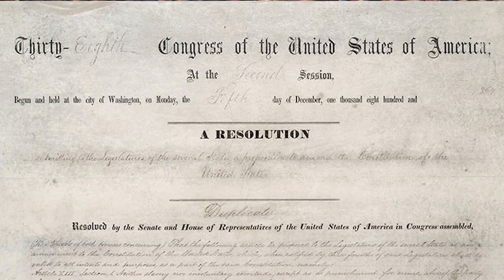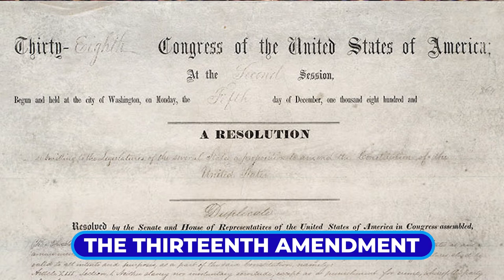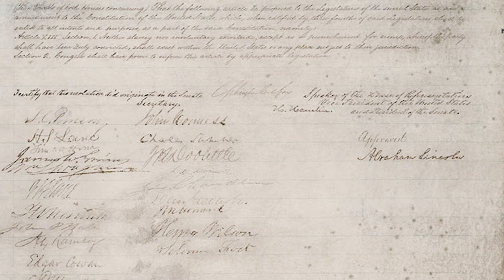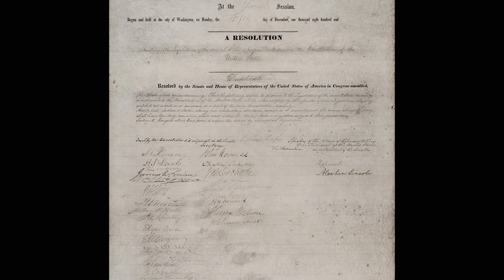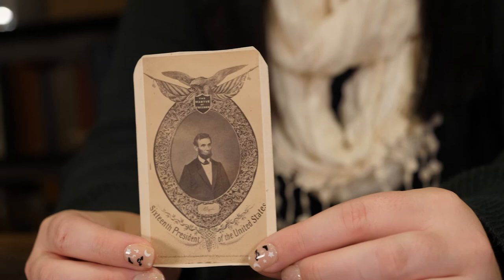It worked. Finally, on January 31, 1865, the House passed the proposed amendment with a vote of 119 to 56, just over the two-thirds needed to ratify. From there, the amendment went on to the state legislatures for ratification.